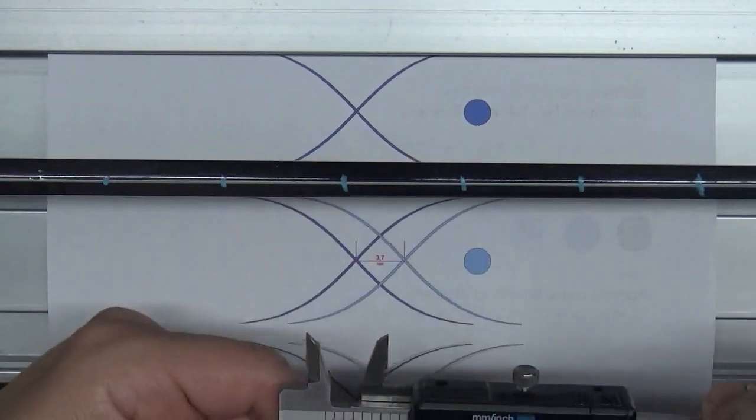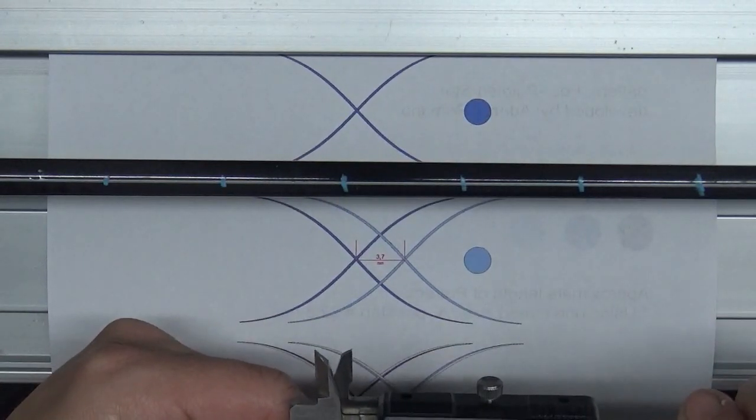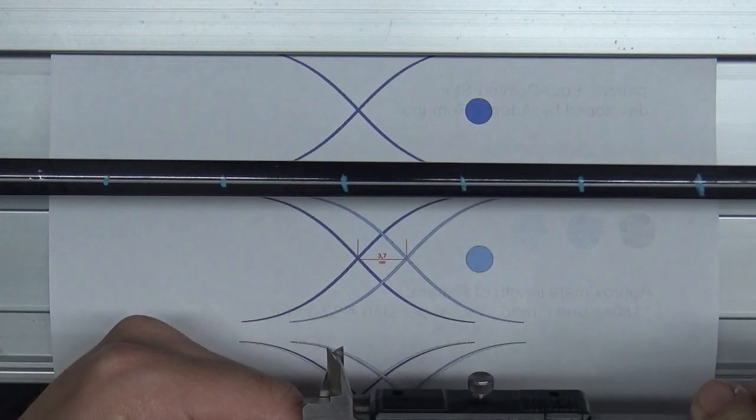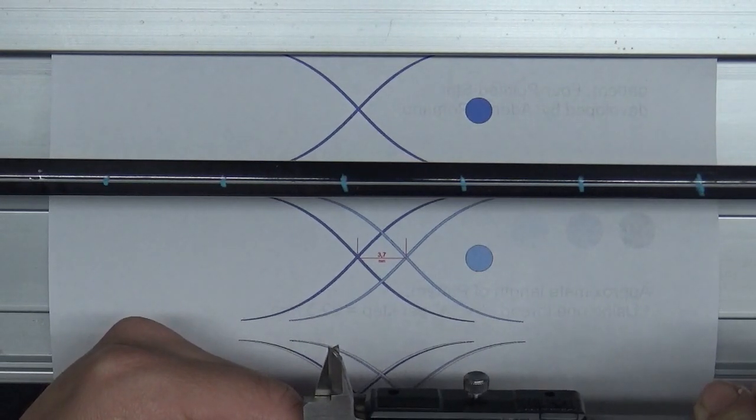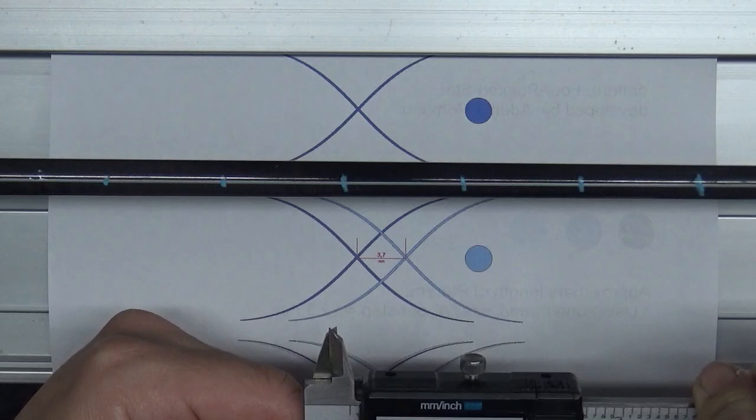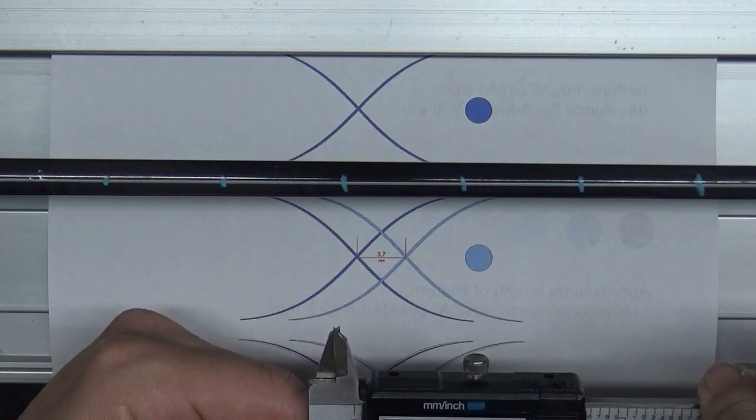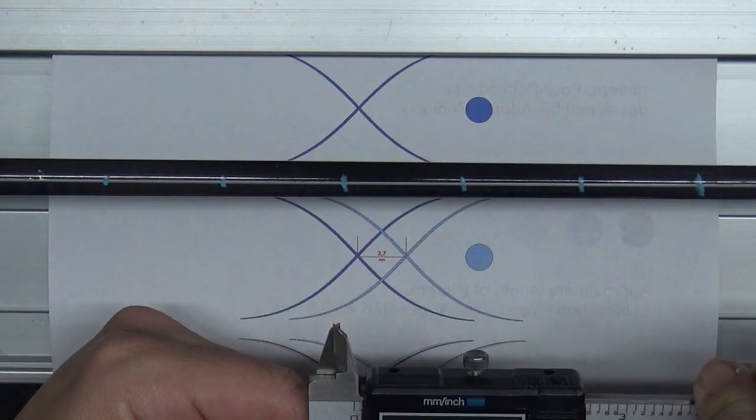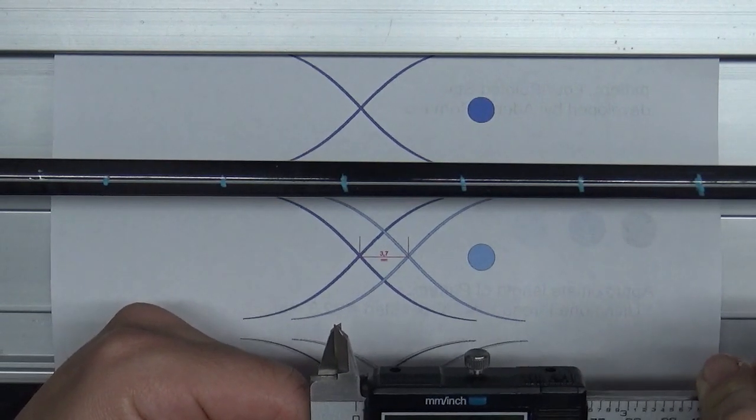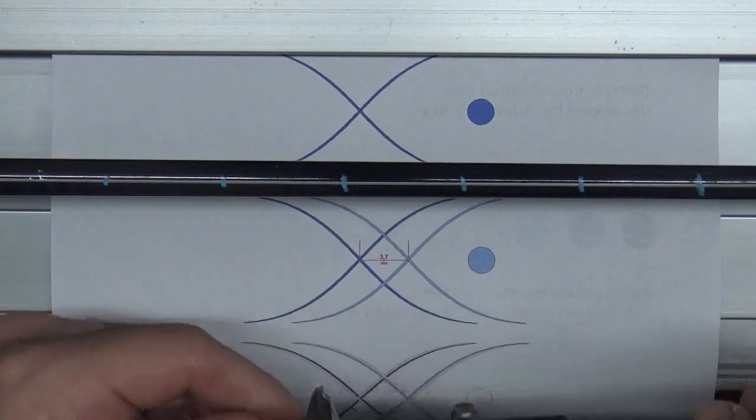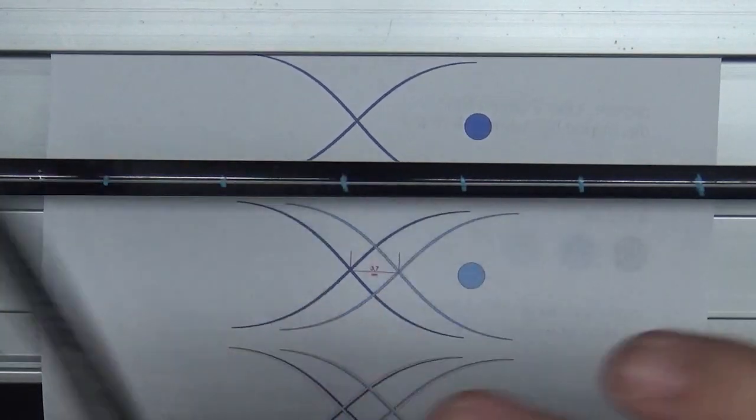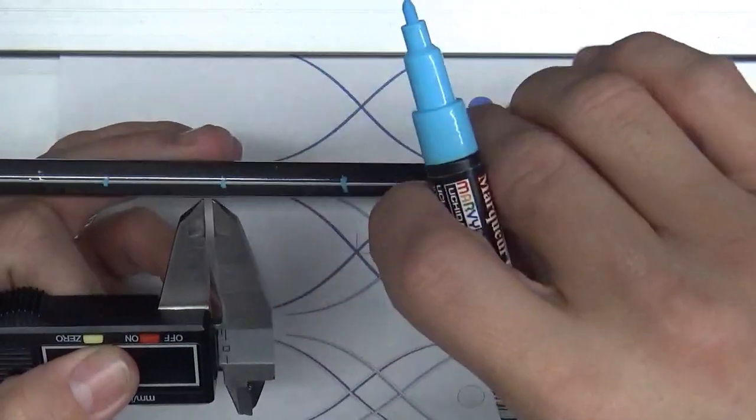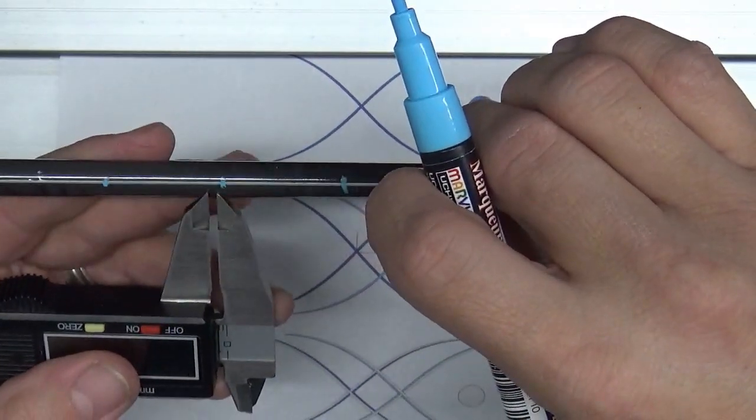Okay, so now we take our caliper, go down to two millimeters, which is pretty small. All right, lock it down.